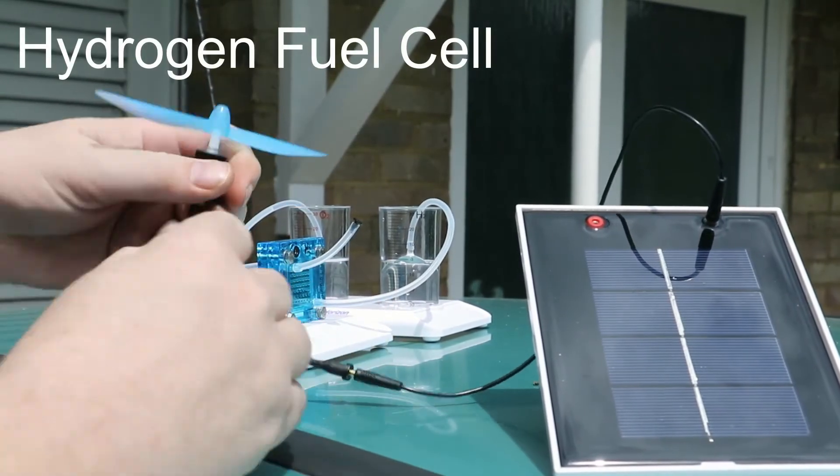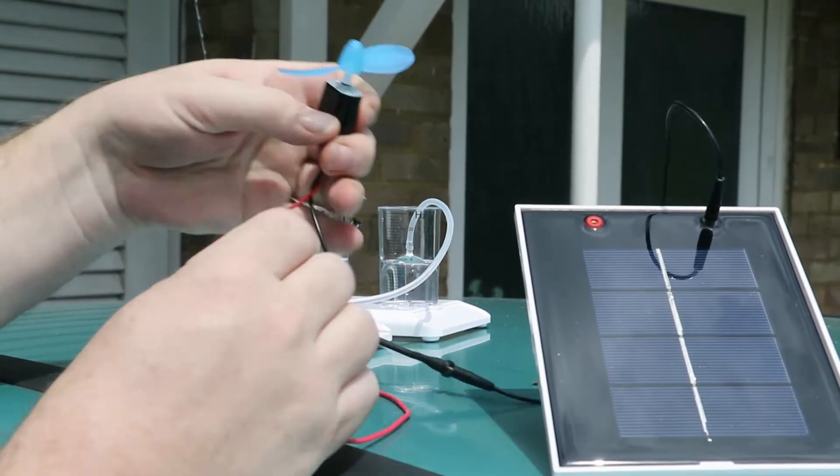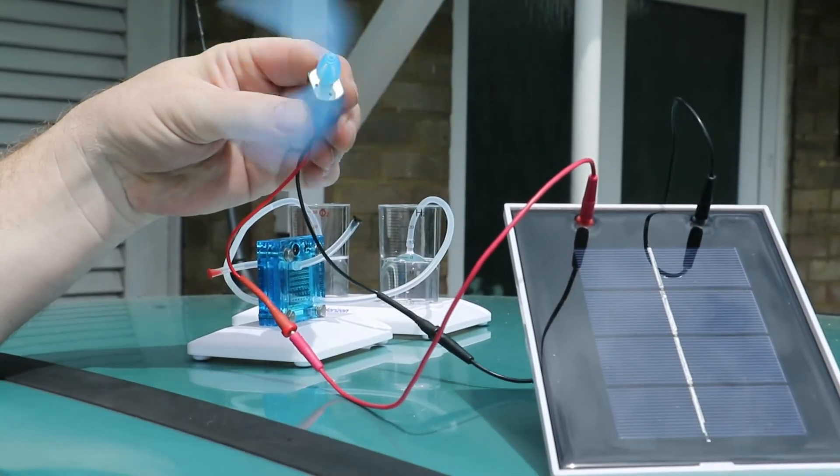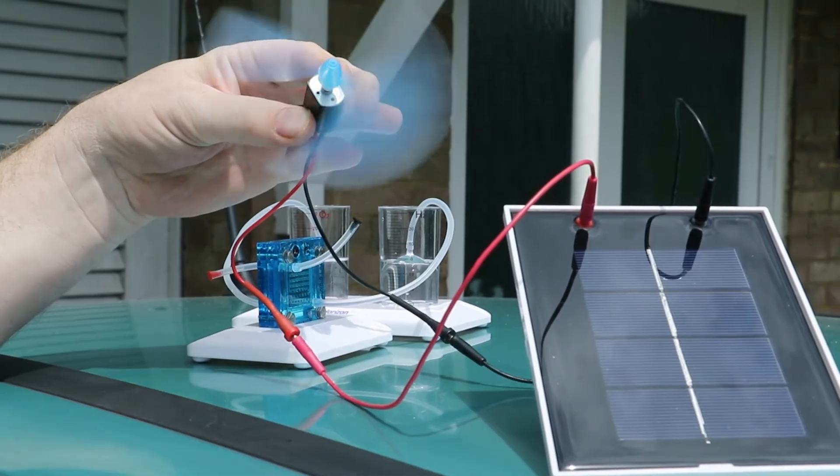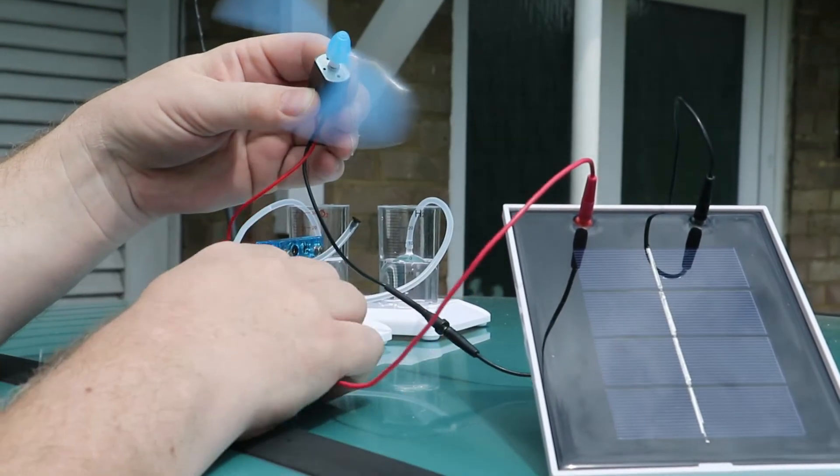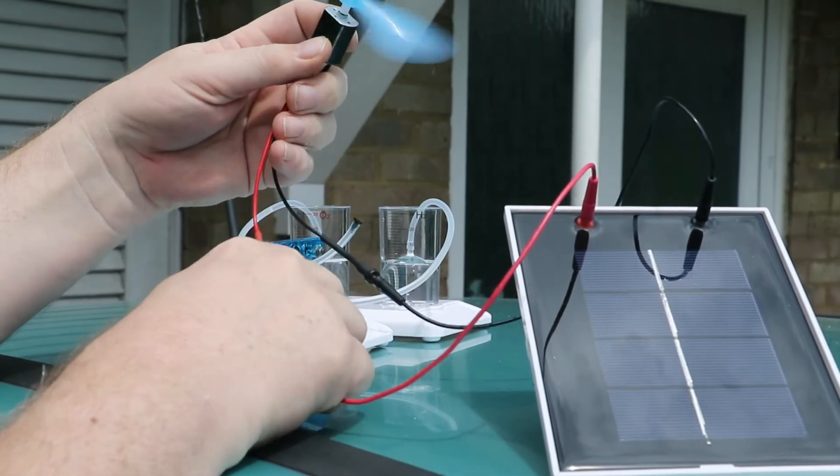We've got a solar cell and we're just going to get the fan going. That's the sun from the solar cell driving a little motor driving a fan.